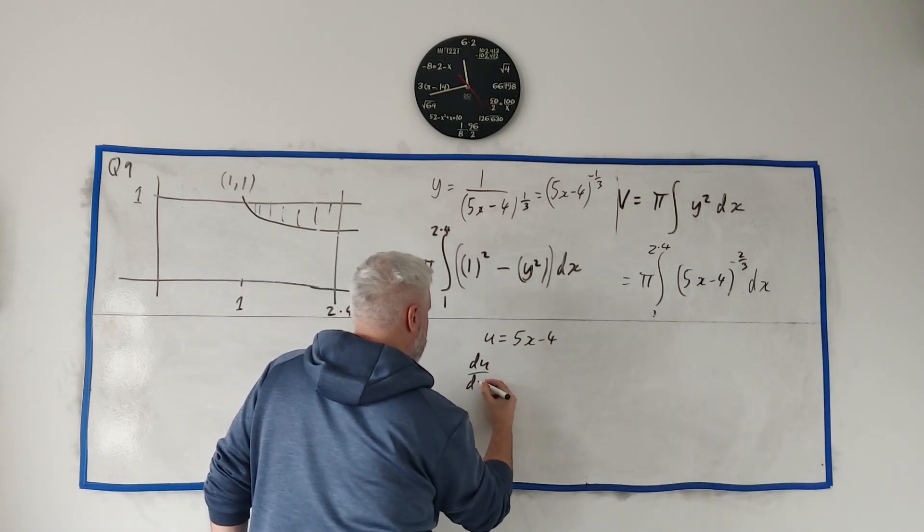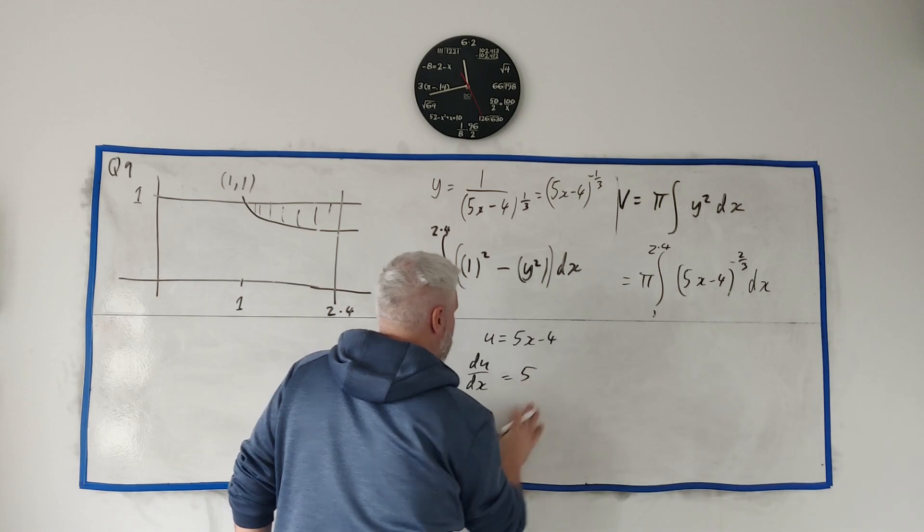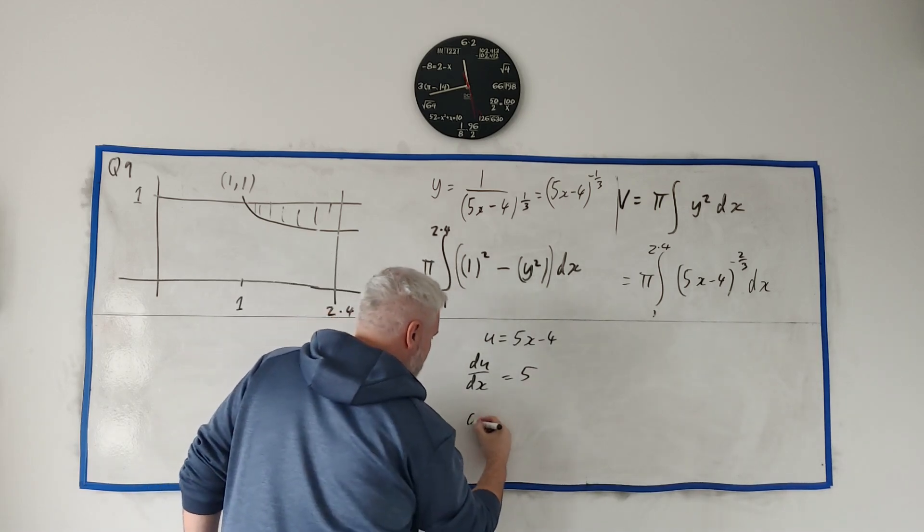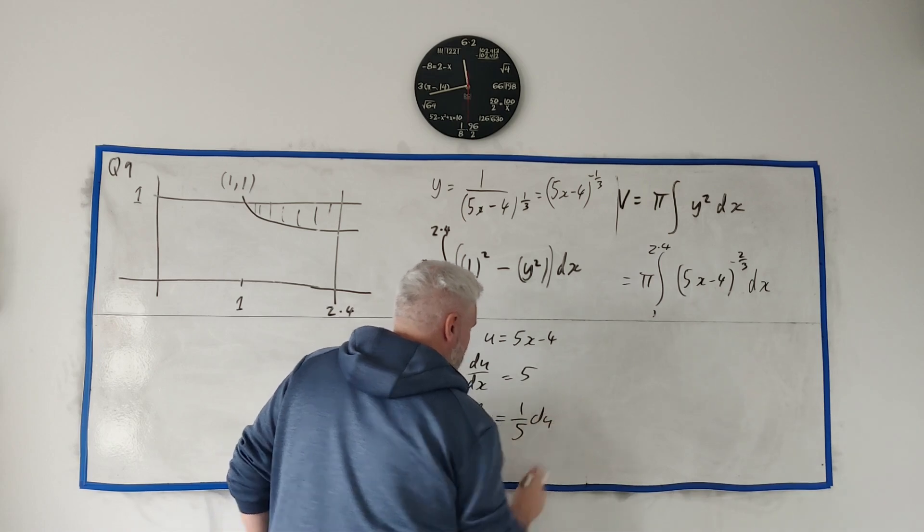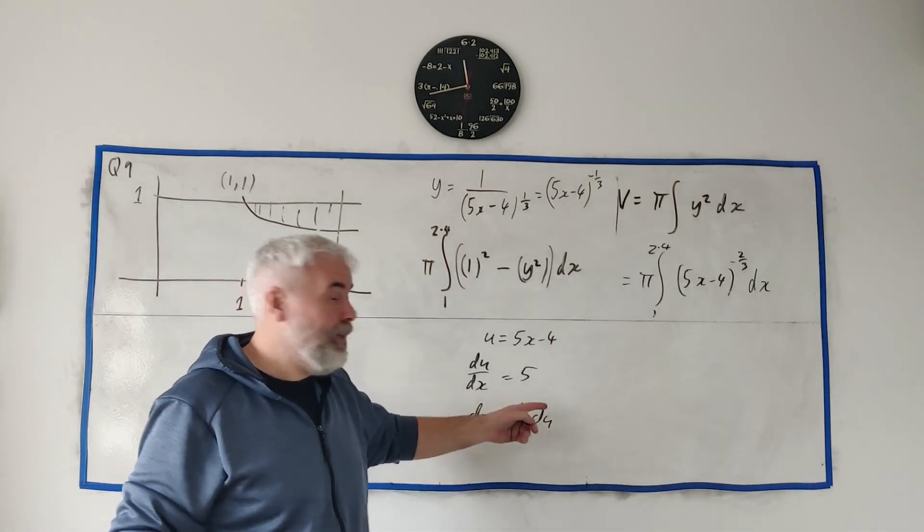u is equal to this, du/dx is equal to 5, and that means if we want to replace the dx, dx would be equal to 1 over 5 du. And that's the cheat that if you did it in your head, that's where that divide by 5 appears.